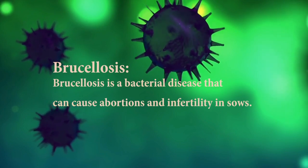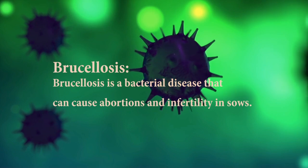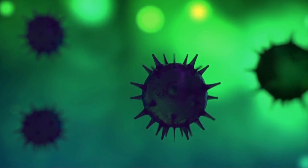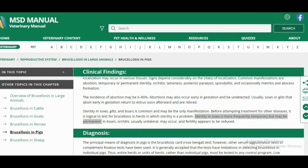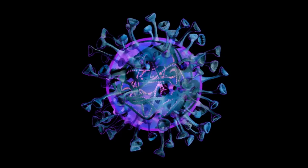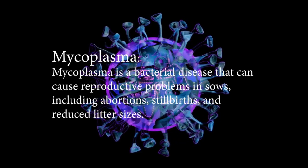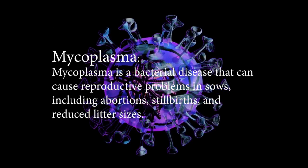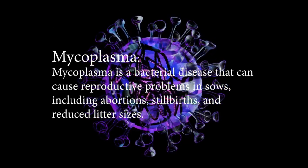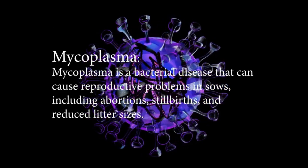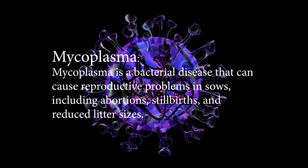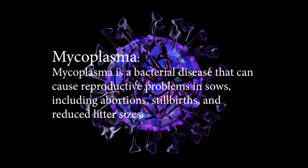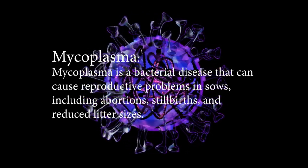Leptospirosis is transmitted through contact with infected tissue or fluids such as placenta, fetal membranes, or milk. Mycoplasma is a bacterial disease that can cause reproductive problems in sows, including abortion, stillbirths, and reduced litter sizes. The disease can also cause respiratory problems and arthritis in pigs.